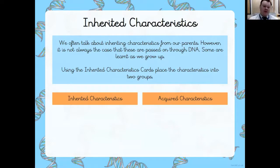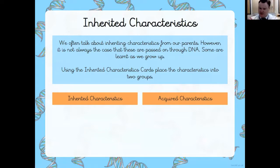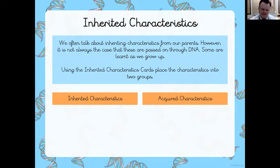We often talk about inheriting characteristics from our parents. However, it's not always the case that these are passed on through DNA — some are learned as we grow up. On the next slide I've got a number of different things, and you've got to decide: are they inherited — do they come from the parents — or are they acquired, meaning they're learned? As we grow up we're always learning. So decide which of the following are inherited and which are acquired.